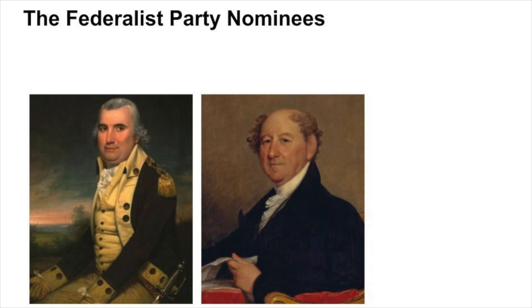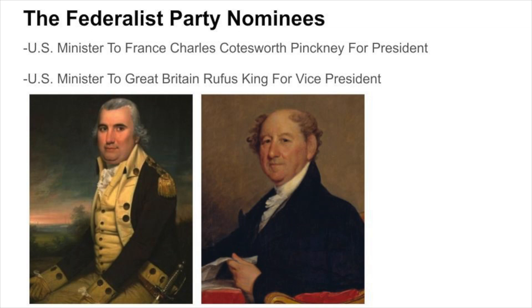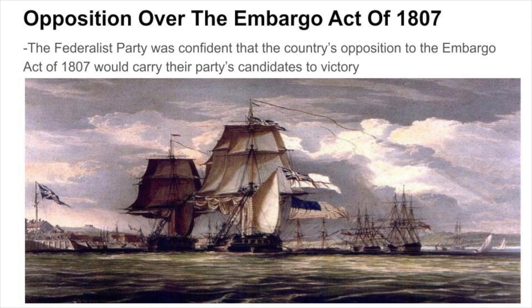Meanwhile, the Federalist Party Caucus met in September of 1808, once again nominating former U.S. Minister to France Charles Cotesworth Pinckney for president, and former U.S. Minister to Great Britain Rufus King for vice president. The Federalist Party was confident that the country's opposition to the Embargo Act of 1807 would carry their party's candidates to victory.